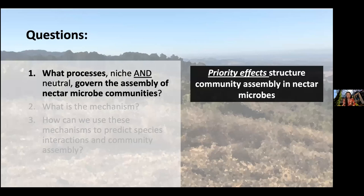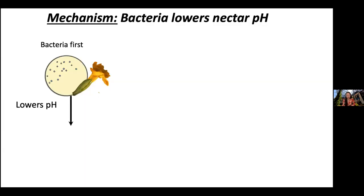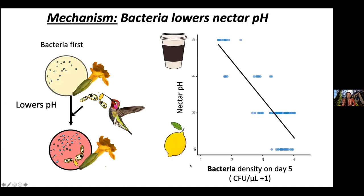Because these experiments were done in the lab, we could get at the mechanisms. We hypothesized that bacteria lower the nectar pH, thereby hurting the yeast. When we measured nectar pH in these microcosms, we saw that as bacterial density increased, the nectar pH dropped from around pH 5 — like a cup of coffee — down to pH 2, similar to lemon juice. This seemed like a compelling mechanism by which bacteria exert negative priority effects on yeast.